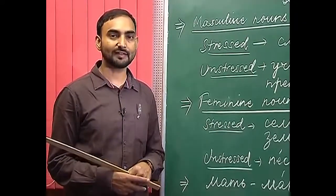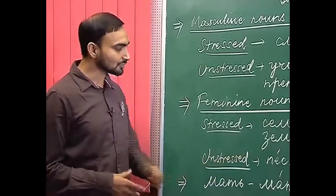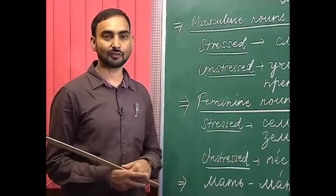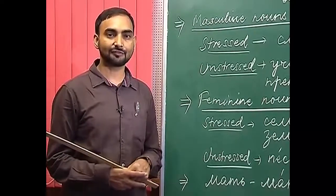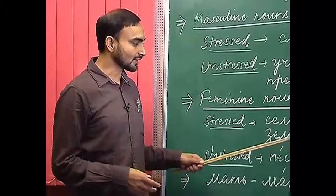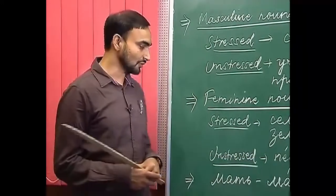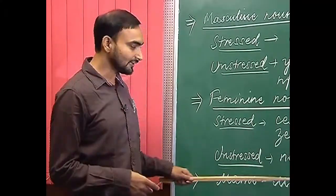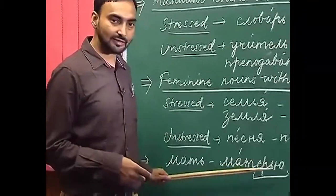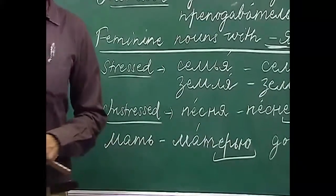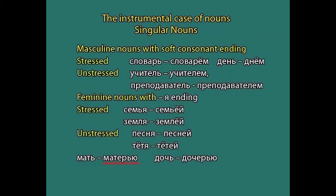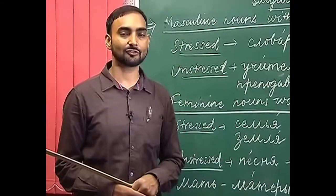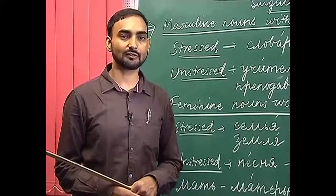We are talking about singular nouns only. Now let us discuss мать and дочь. As we have already discussed, мать and дочь have a different declining pattern. When declining them in the instrumental case, they follow the same pattern as other soft sign ending nouns, with the only difference being that we add -ер- in the stem: мать becomes матерью and дочь becomes дочерью.